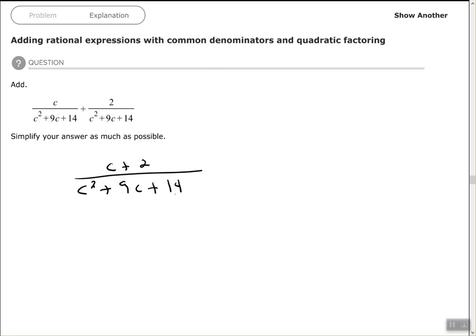So we can factor that. 7 times 2 is 14, and 7 plus 2 is 9. So we can factor that trinomial to c plus 2 times c plus 7.